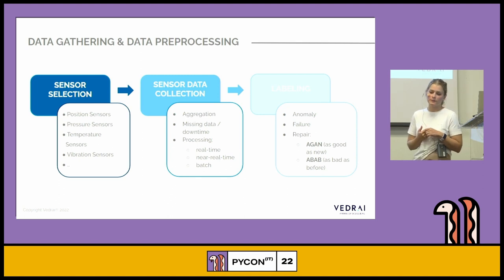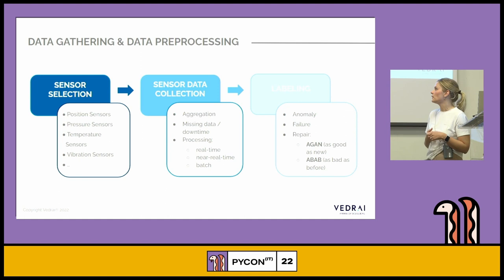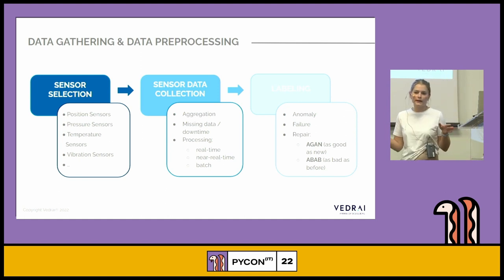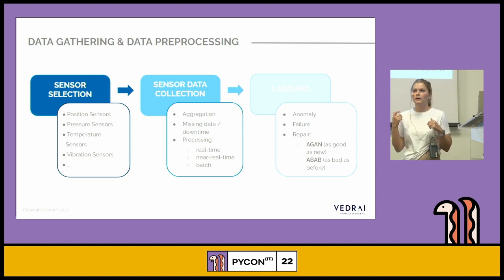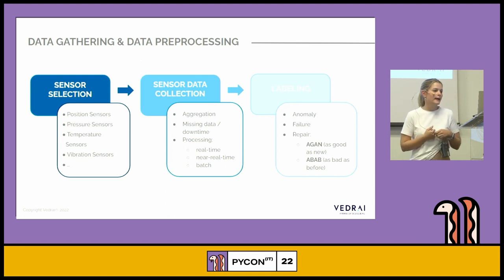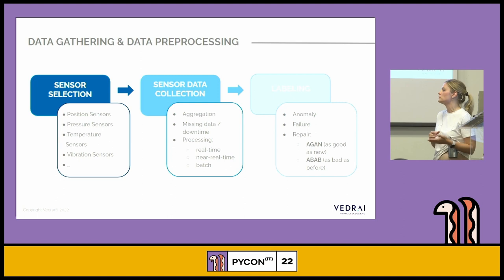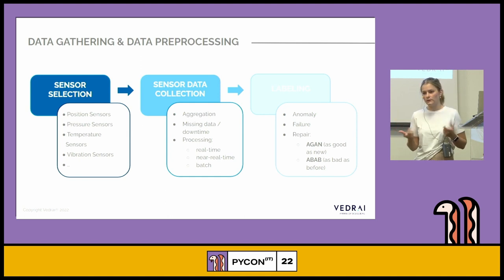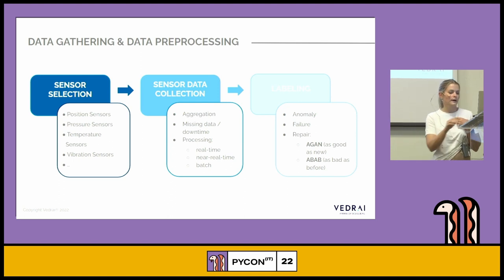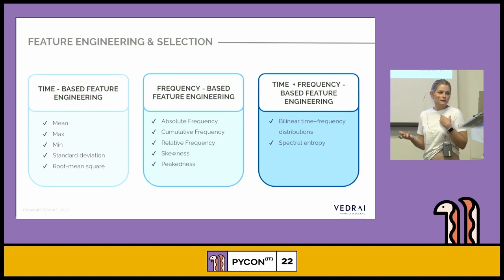We also have to understand how to work with missing data and downtime periods. There is a huge amount of missing data, mostly because of downtime periods of faulty machines or simply because the plant doesn't work during weekends. The last and probably most important part is labeling. We have to collect breakdown events, and importantly it's not only about recording the breakdown but also about assigning whether the machine was restored as good as before or only partially repaired and could break again.